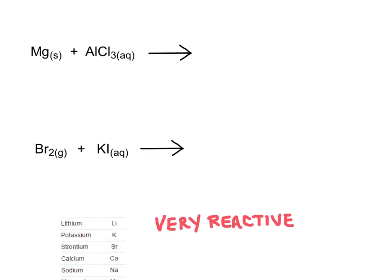Here are the two reactions we're going to look at. The first one has magnesium all by itself reacting with aluminum chloride. These little symbols — letters in parentheses — represent the state of each substance. The 's' means solid, and 'aq' means it's dissolved in water, kind of like when you dissolve table salt in water.